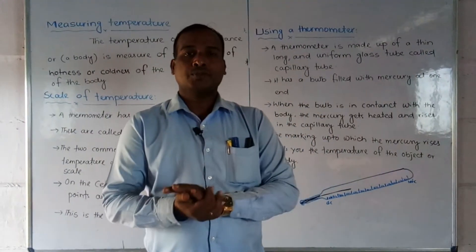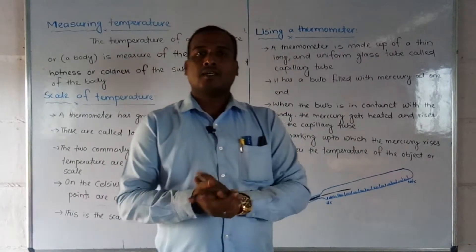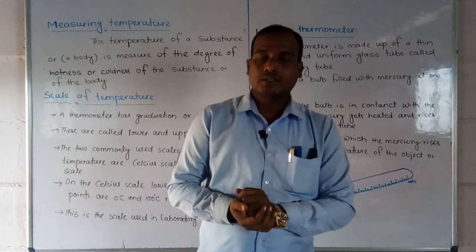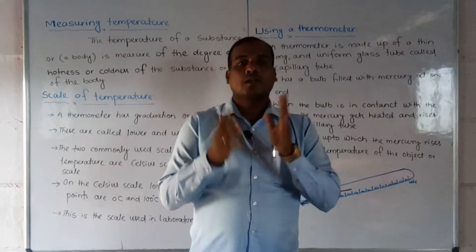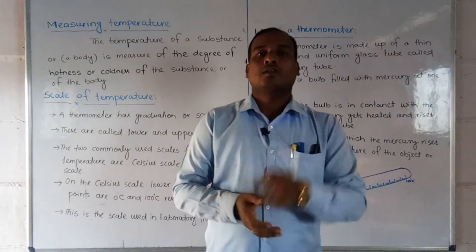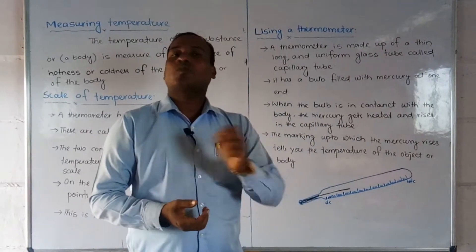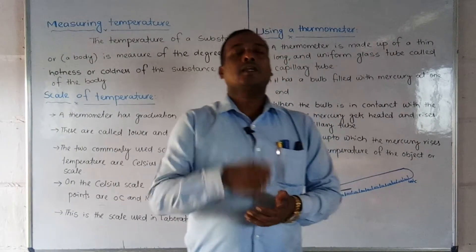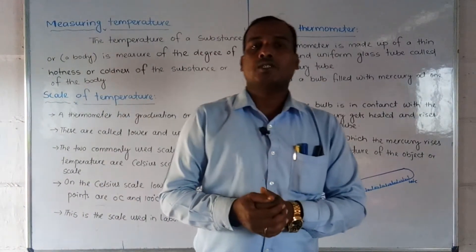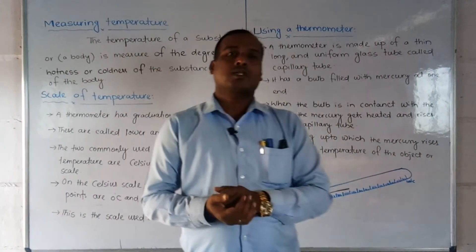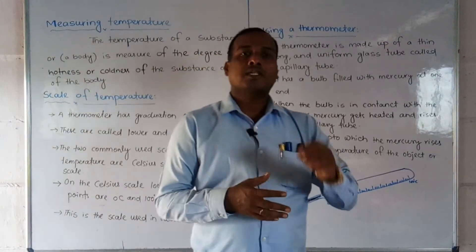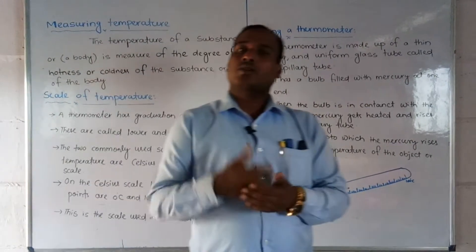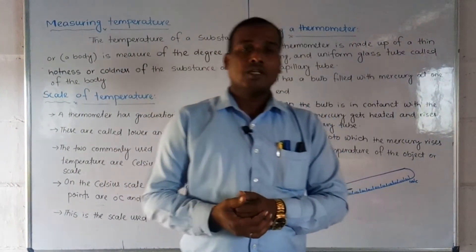Hello everyone, good morning and welcome back to our online class, Science 7th standard. Today we are going to continue our fourth chapter, that is Heat. We can find out whether something is cool or hot by measuring the temperature. The unit for temperature is degree Kelvin, but we also use different scales like Fahrenheit, Celsius, and degree Kelvin.